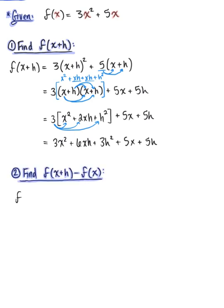So f of x plus h minus f of x. We are taking what we just found in step one above. So that is 3x squared plus 6xh plus 3h squared plus 5x plus 5h. And now we're subtracting the entire original function. Use your parentheses for safety. So it's going to be minus 3x squared plus 5x.